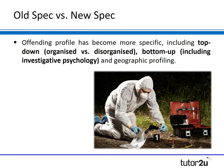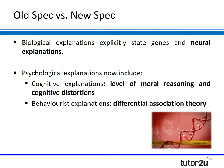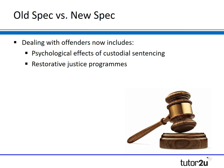Key terms now highlighted include top-down, organised versus disorganised, bottom-up including investigative psychology, and geographical profiling. In terms of the biological explanations, they now explicitly state genes and neural explanations. The psychological explanations name levels of moral reasoning and cognitive distortions, as well as the behaviourist theory of differential association theory. Dealing with offenders now includes psychological effects of custodial sentencing and restorative justice programmes — those are the key summary changes.